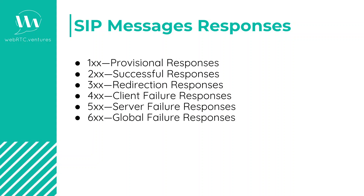When we are getting some kind of response that starts with 1, it's a provisional response — for example, 180, which is a ringing message. Then we have the 2xx, which indicates a successful response. 200 OK, for example, indicates that the request is successful.